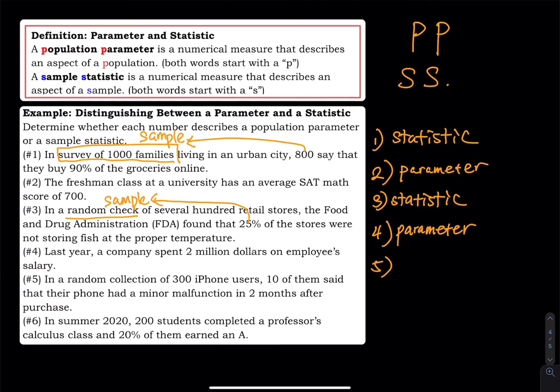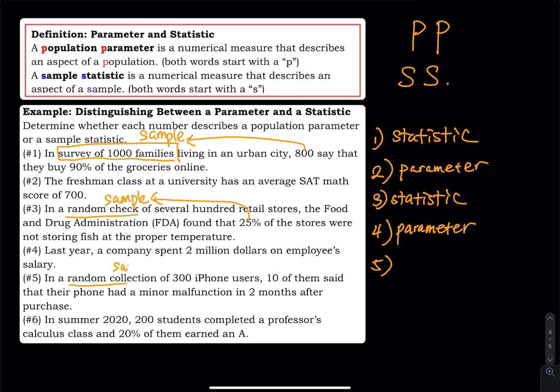Number five, in a random collection. Random collection means we have a sample. Ten of them describes the sample. So number five is a statistic. Number six, in summer 2020, 200 students completed a professor's calculus class, and 20% of them earned an A. So the 200 students, this is a population. Out of the entire population, 20% got an A, so the 20% described a population. So that must be a parameter.